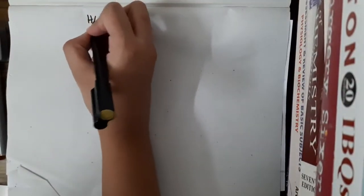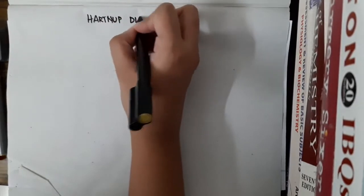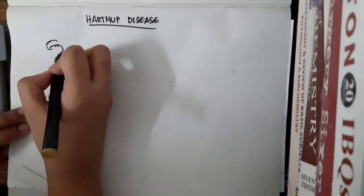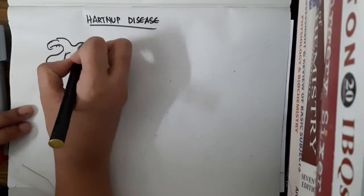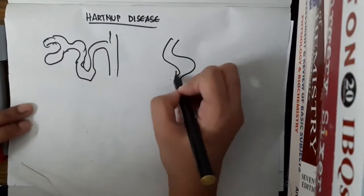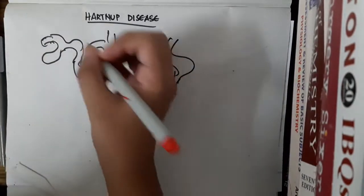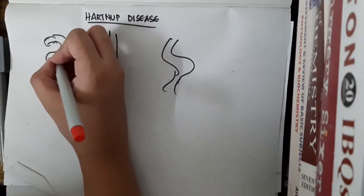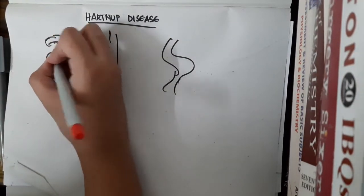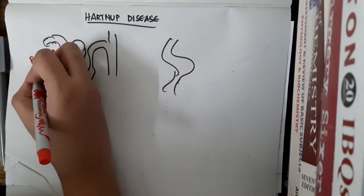Hello friends, let us now learn about a disease called Hartnup disease. Hartnup disease occurs due to the failure of reabsorption of neutral amino acids from the kidney and the intestines. We have a gene which codes for a transporter called the BO81 transporter.